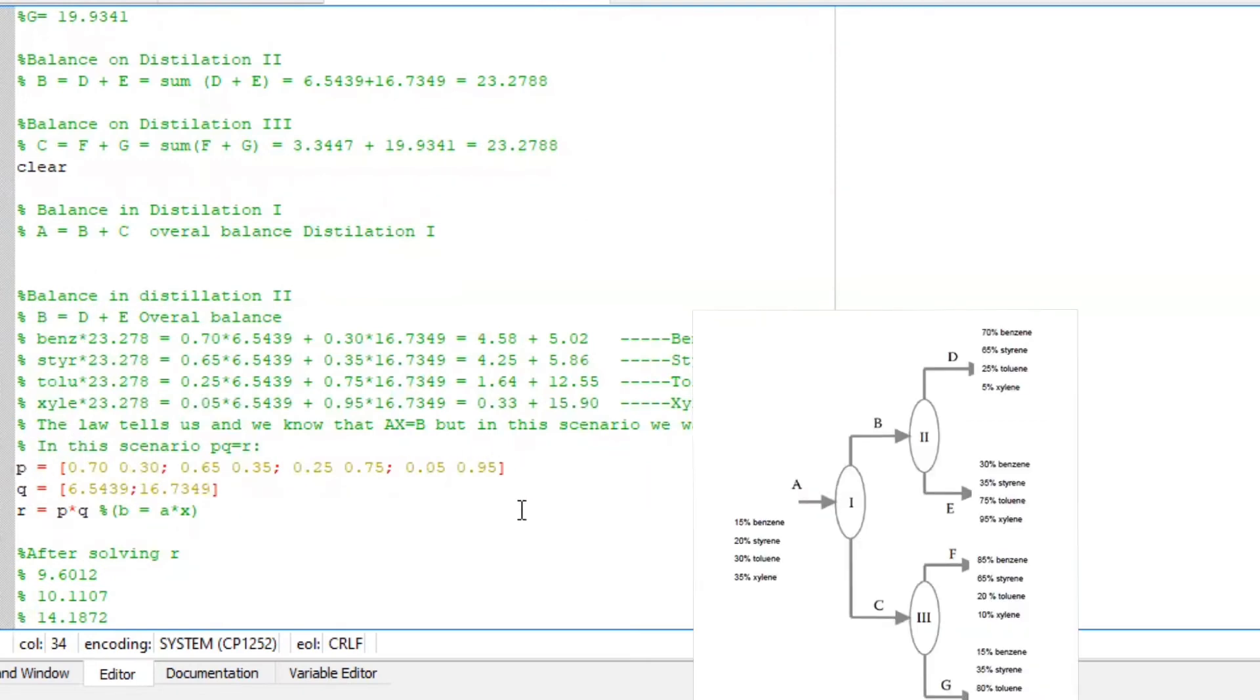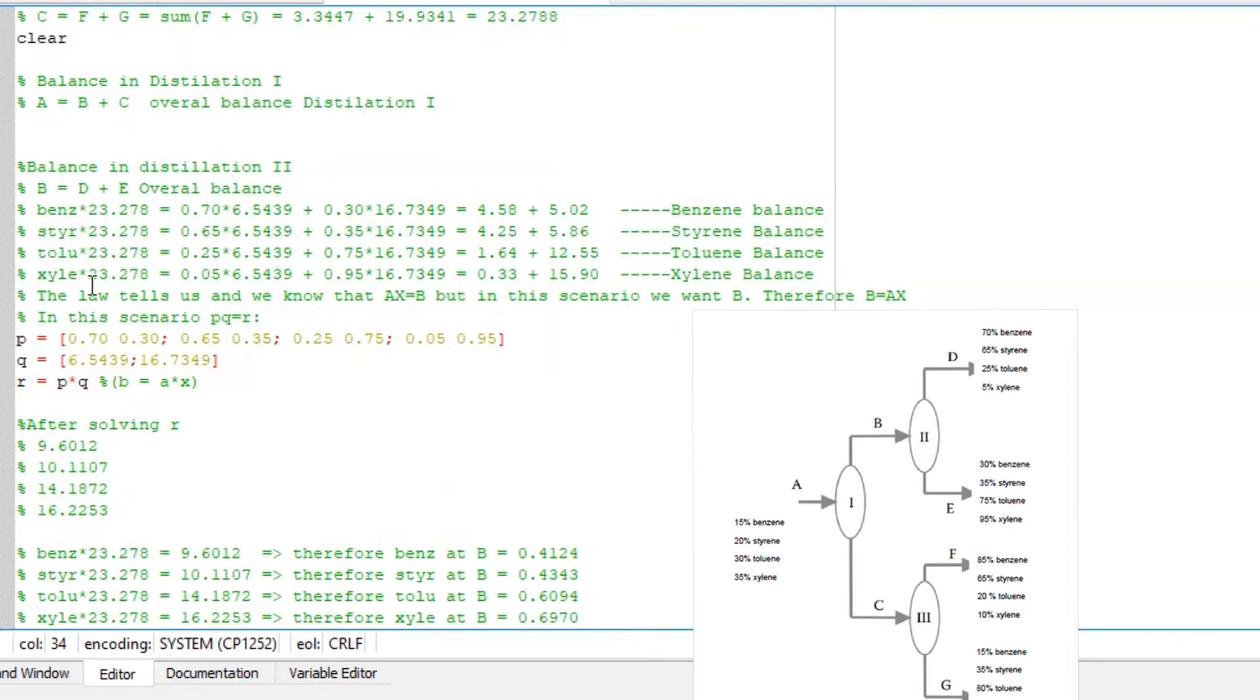I am going to make use of the matrix law again to solve for the compositions of B, which are my unknowns. And this is what I got: 9, 10, 14, and 16.